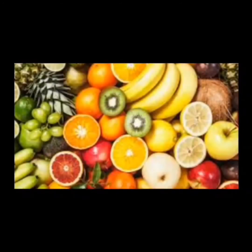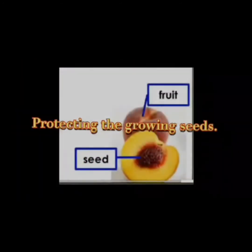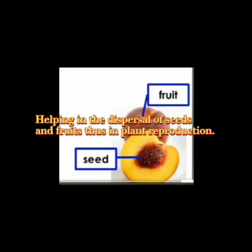Fruits are found in the flower after fertilization. The functions of fruits are protecting the growing seeds and helping in the dispersal of seeds, and thus in plant reproduction.